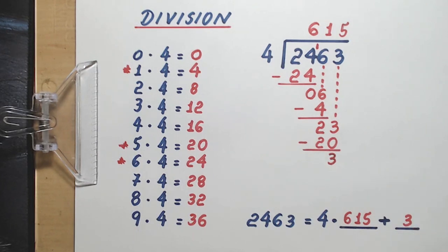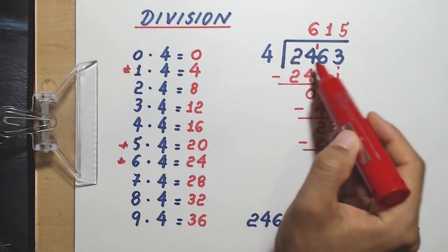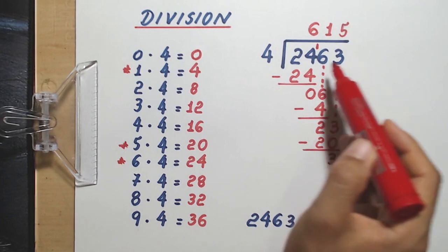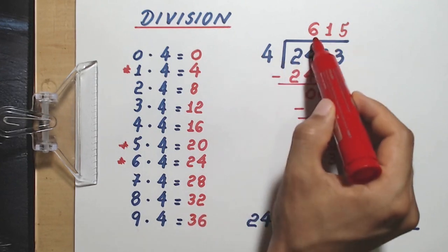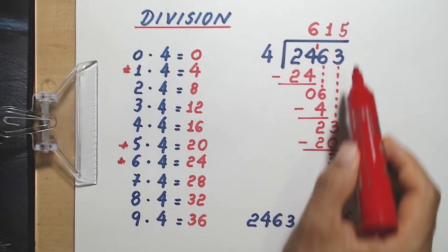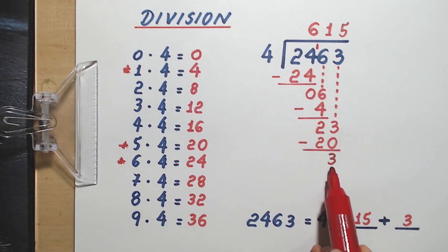Imagine this situation. There are 2,463 books that should be divided equally among 4 schools. Each school would get 615 books, and there would be 3 books left over.